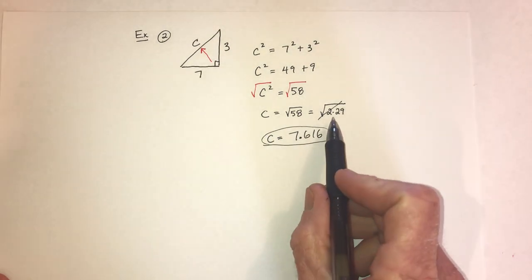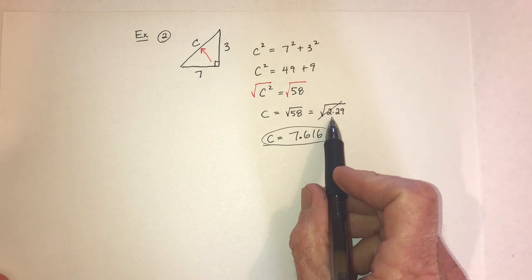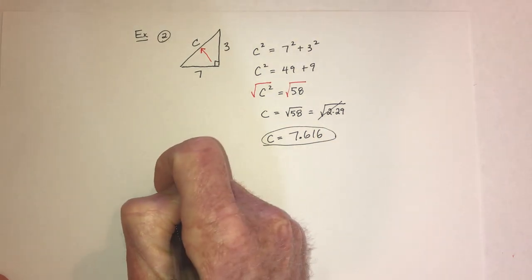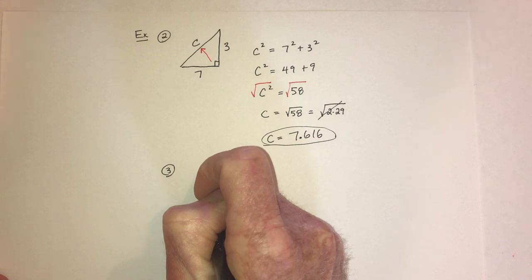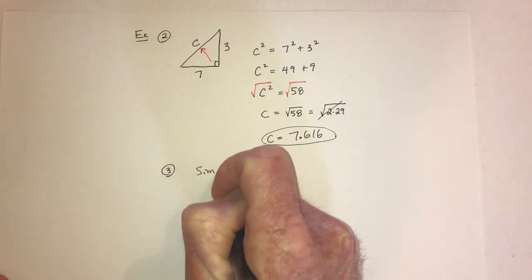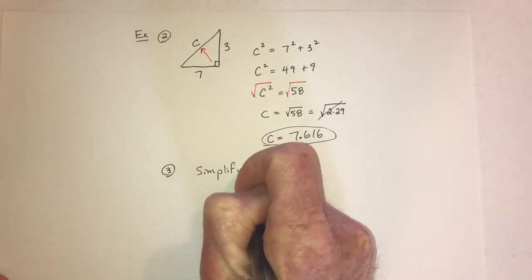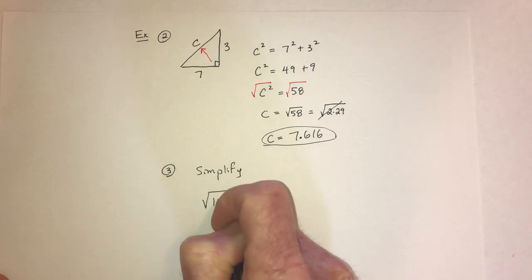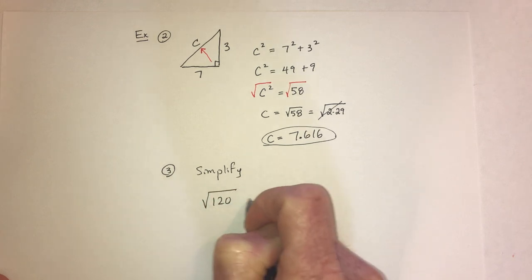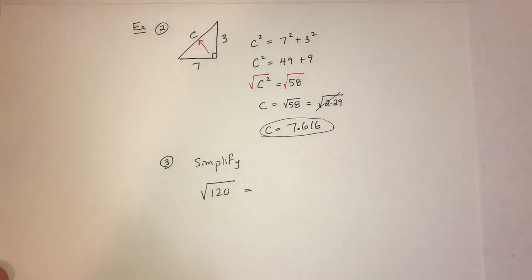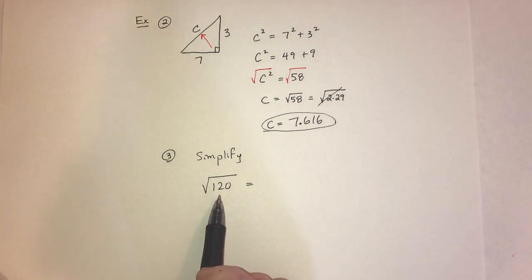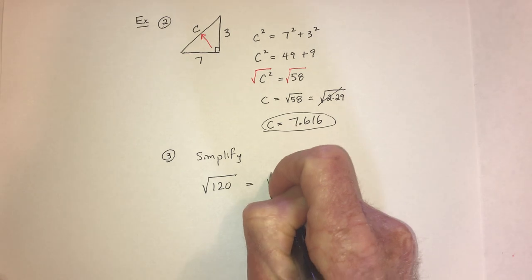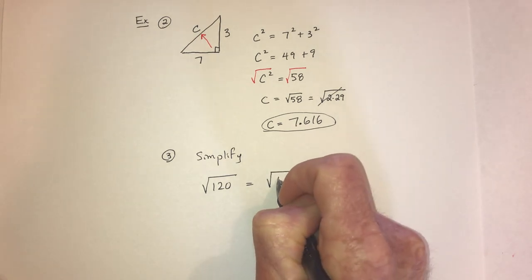Let me show you one that does work out — example number 3: simplify the square root of 120. When simplifying radicals, you need to factor the number. Not only that, try to factor it with something whose square root you already know.